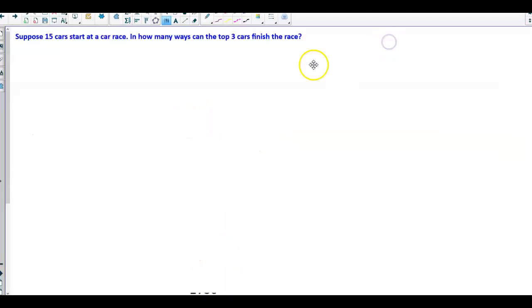In this case, order matters. Since order matters, we're going to have to use permutations because we know it's asking for the top 3 cars.